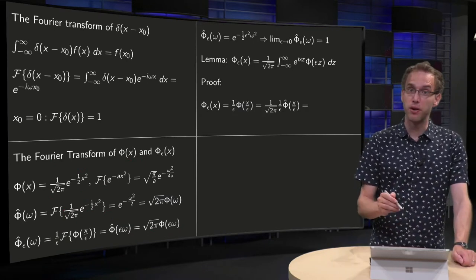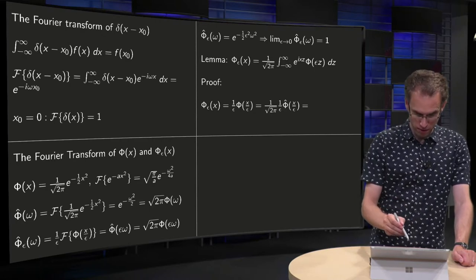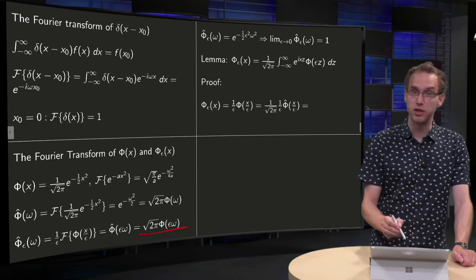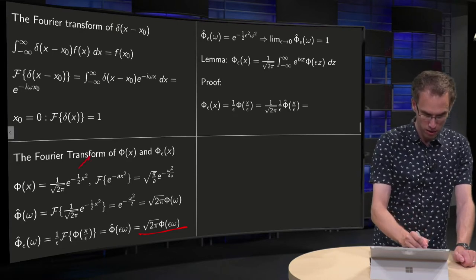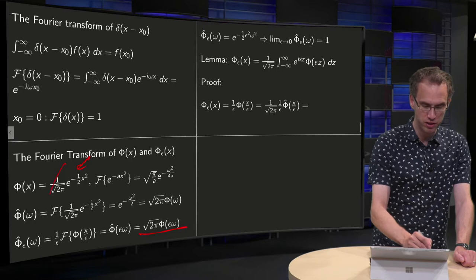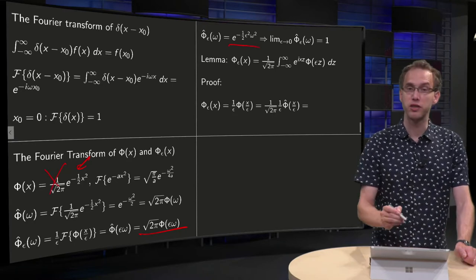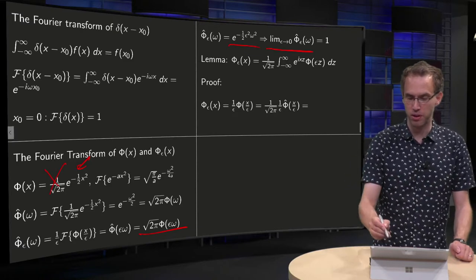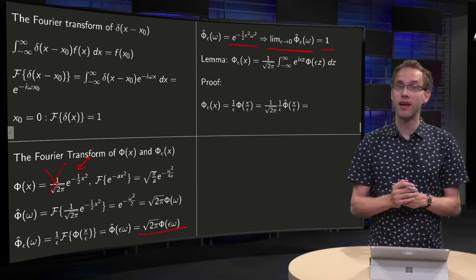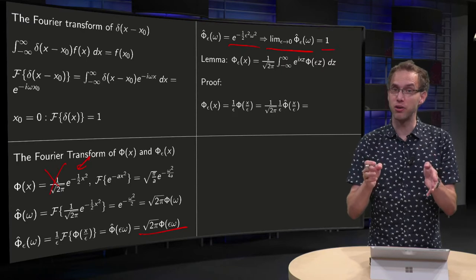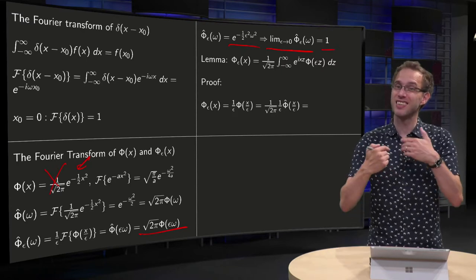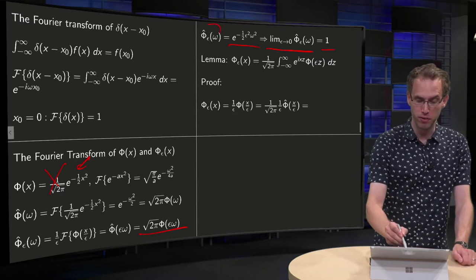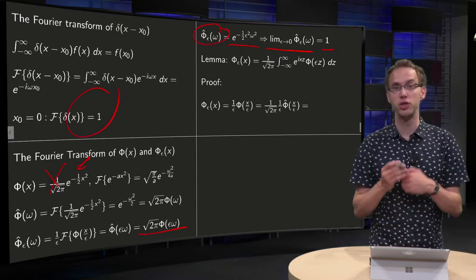Plugging in the numbers: phi-hat_epsilon of omega becomes the expression with epsilon substituted in and multiplied by two pi, which cancels the corresponding factor, giving e to the power of minus one half epsilon squared omega squared. Taking epsilon to zero, the limit gives phi-hat_epsilon of omega equals one. This makes sense: as epsilon goes to zero, phi_epsilon tends to the delta function, so its Fourier transform tends to that of the delta function, which is one.